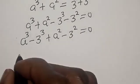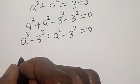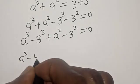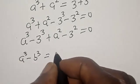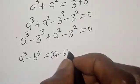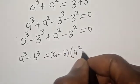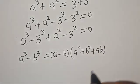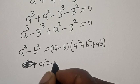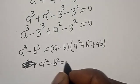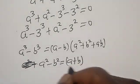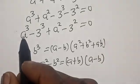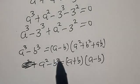Let's remember these identities: A cubed minus B cubed equals (A minus B)(A squared plus B squared plus AB), and A squared minus B squared equals (A plus B)(A minus B). In this case, our A is A and our B is 3.